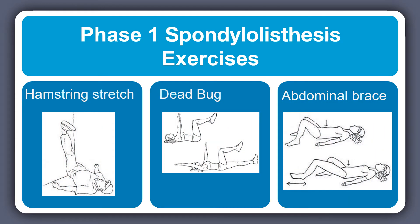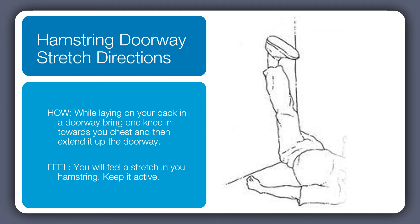The phase one spondylolisthesis exercises are the hamstring stretch, the dead bug, and the abdominal brace. For the hamstring doorway stretch, you will lay on your back, place one leg inside the doorway, then bring the other leg up the side of the wall adjacent to the doorway. Start by bringing the knee towards the chest and then gently slide the heel up the wall. If you get all the way to the top, you can gently bring the toes towards the head to get more stretch through the hamstring. Then just hold this gently.